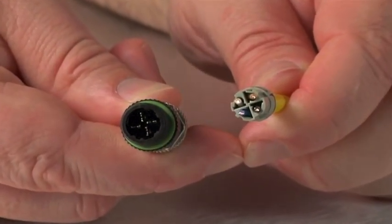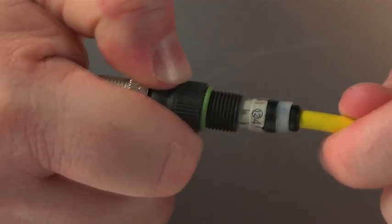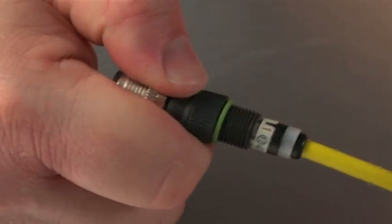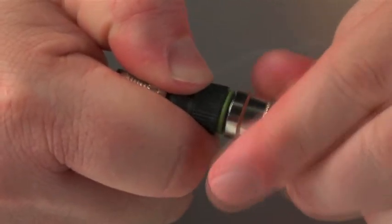Align the contact carrier with the connector termination. Alignment keys are present to help with this step and to prevent improper pin alignment. Press the contact carrier and strain relief into the back of the connector termination.